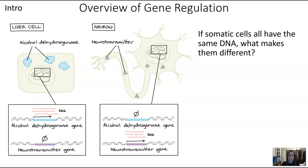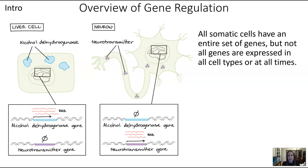This is where gene regulation comes in. Even though somatic cells have an entire set of genes, not all of the genes are expressed in all cell types or at all times. A liver cell is expressing the alcohol dehydrogenase gene but not a particular neurotransmitter gene, whereas a neuron is not expressing the alcohol dehydrogenase gene but is expressing the neurotransmitter gene.